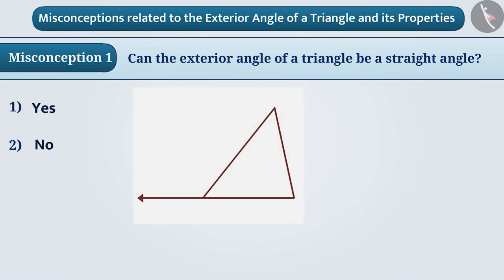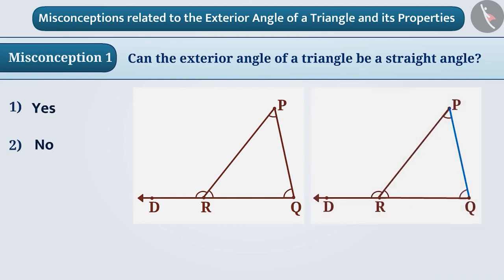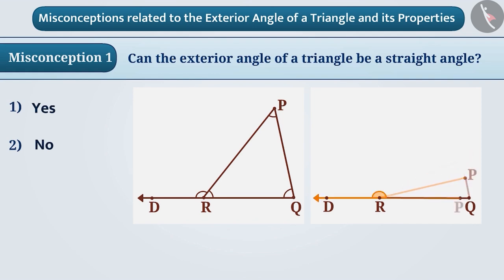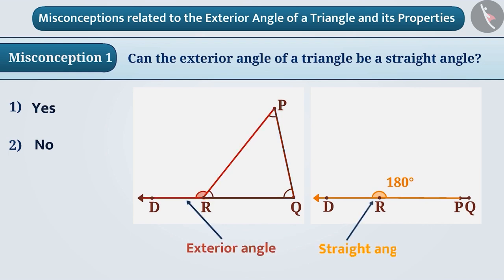Suppose we draw a triangle PQR in which the angles are as shown. If we keep reducing the length of side PQ, we will notice that the measure of exterior angle PRD keeps increasing. When points P, Q, and R lie on the same line, the exterior angle will measure 180 degrees. But in such a case, they will not form a triangle. From this, you can understand that the exterior angle cannot be a straight angle.